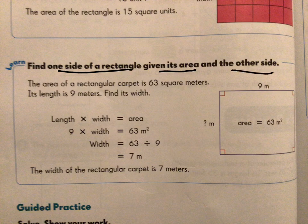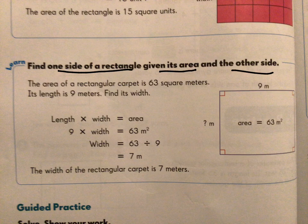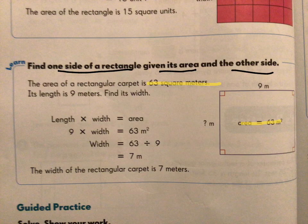Here's an example of that problem. It says the area of a rectangular carpet is 63 square meters. The area is 63 meters squared. There it shows it on the rectangle. And its length is 9 meters. We need to find what its width is. So using what we know, let's solve to find the width.